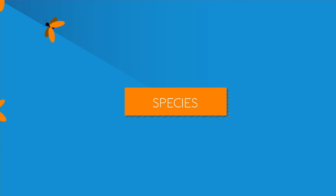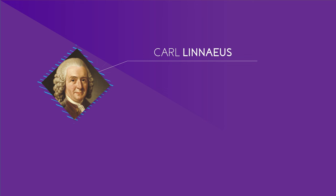In this video we are going to discover what the word species means and how new species are created. 18th century naturalist Carl Linnaeus used the term species to describe a group of very similar organisms.